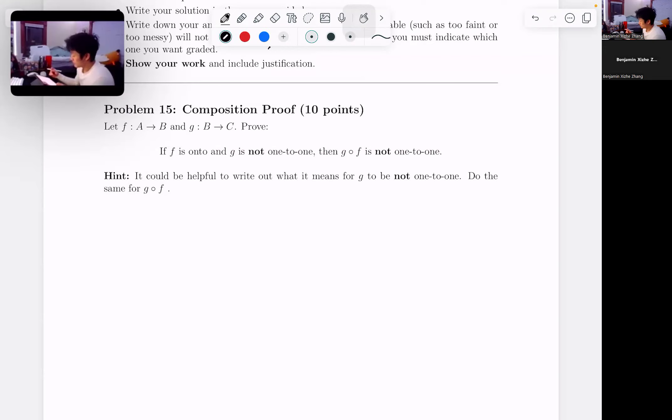The hint tells us it could be helpful to write out what it means for g to not be one-to-one, and the same for g of f. So let's take a look at that. Normally when we say g is one-to-one, then we're saying that g of b1 equals g of b2 implies that b1 equals b2. And there's also the quantifiers for this, for all b1, b2 in B.